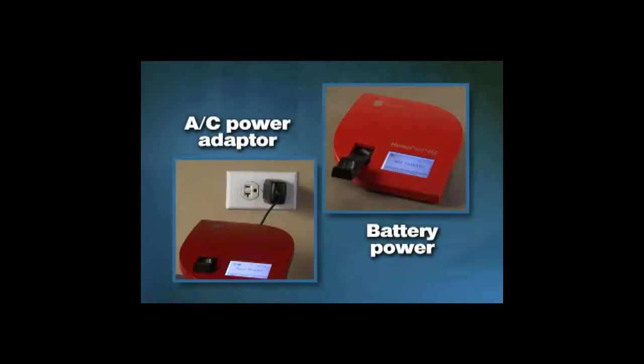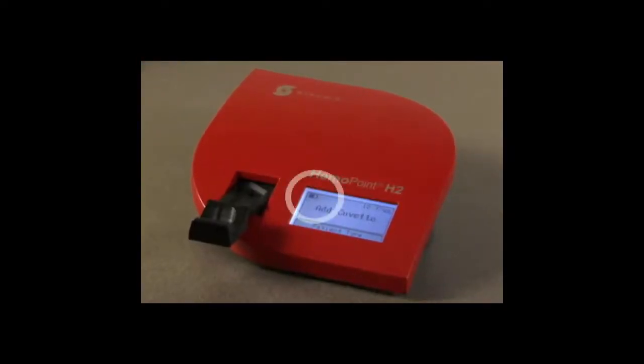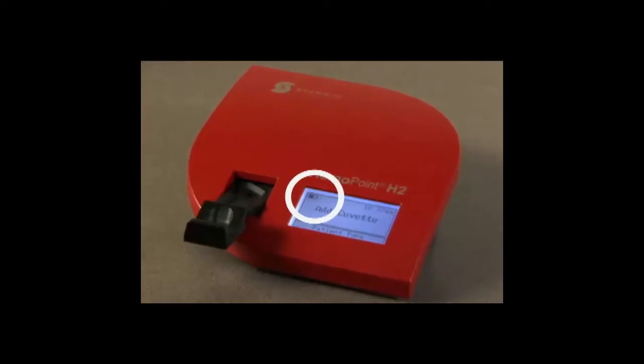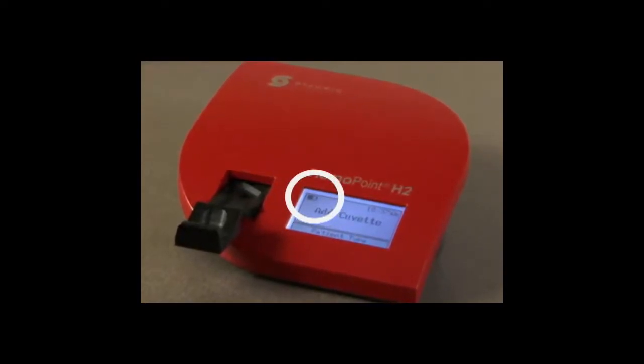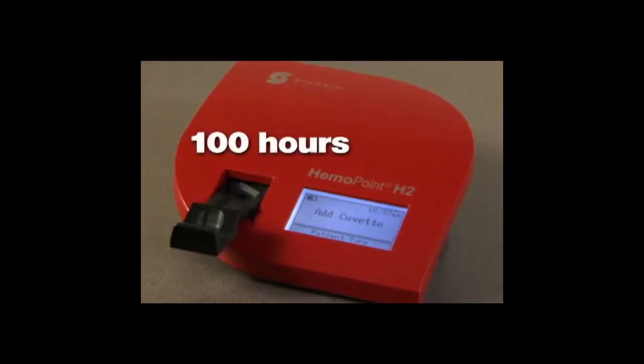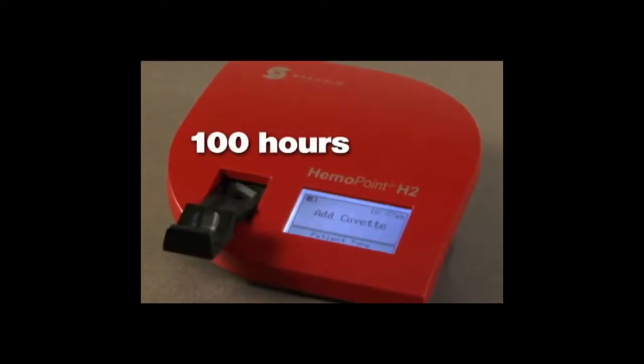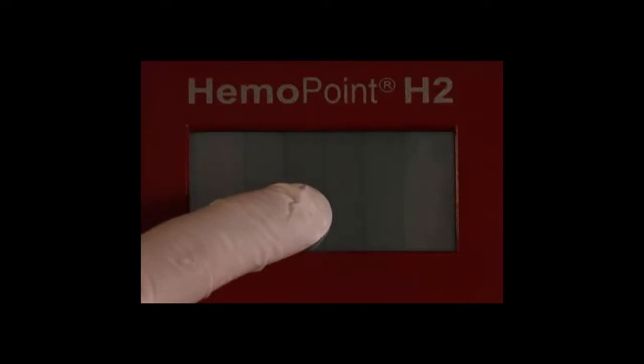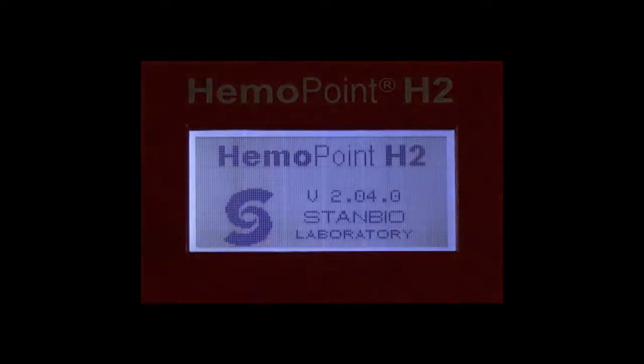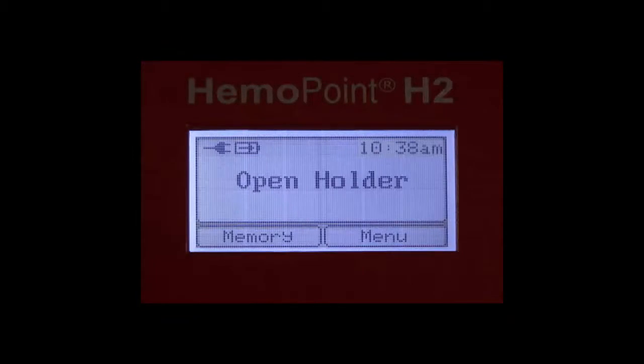Also note that the photometer does not have an on-off switch. The photometer automatically switches to battery power when the unit is unplugged, assuming that the battery is sufficiently charged. On a fully charged battery, the unit will operate for at least 100 hours. After the unit initializes, the welcome display screen appears briefly, followed by the ready mode screen, which indicates that the unit is ready to operate.